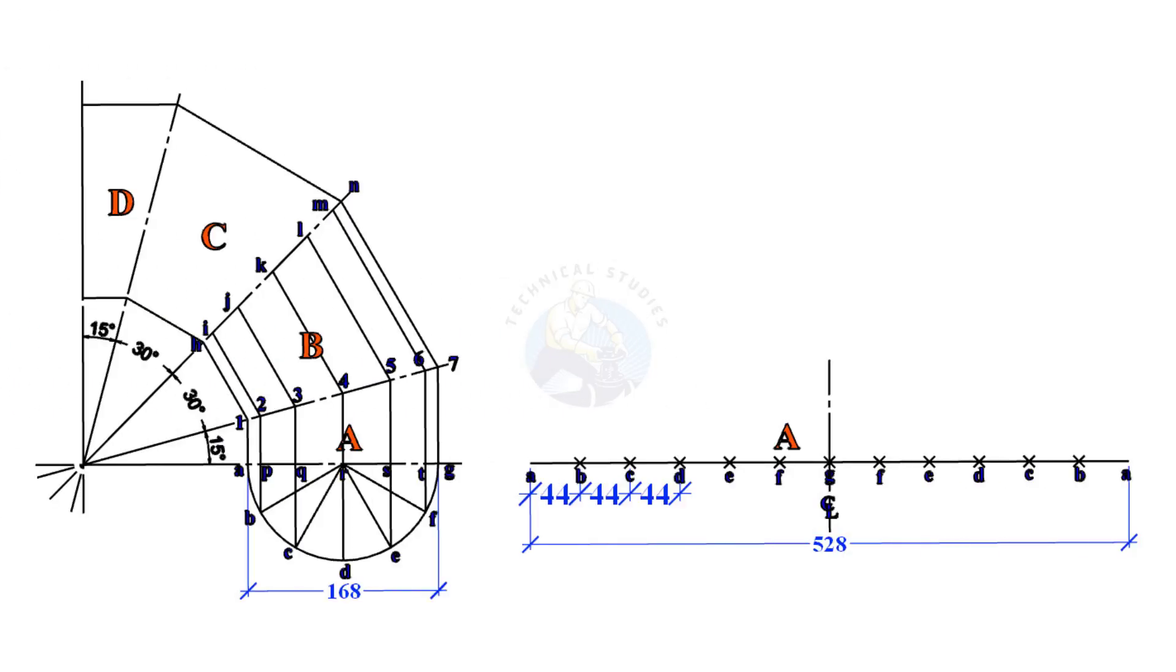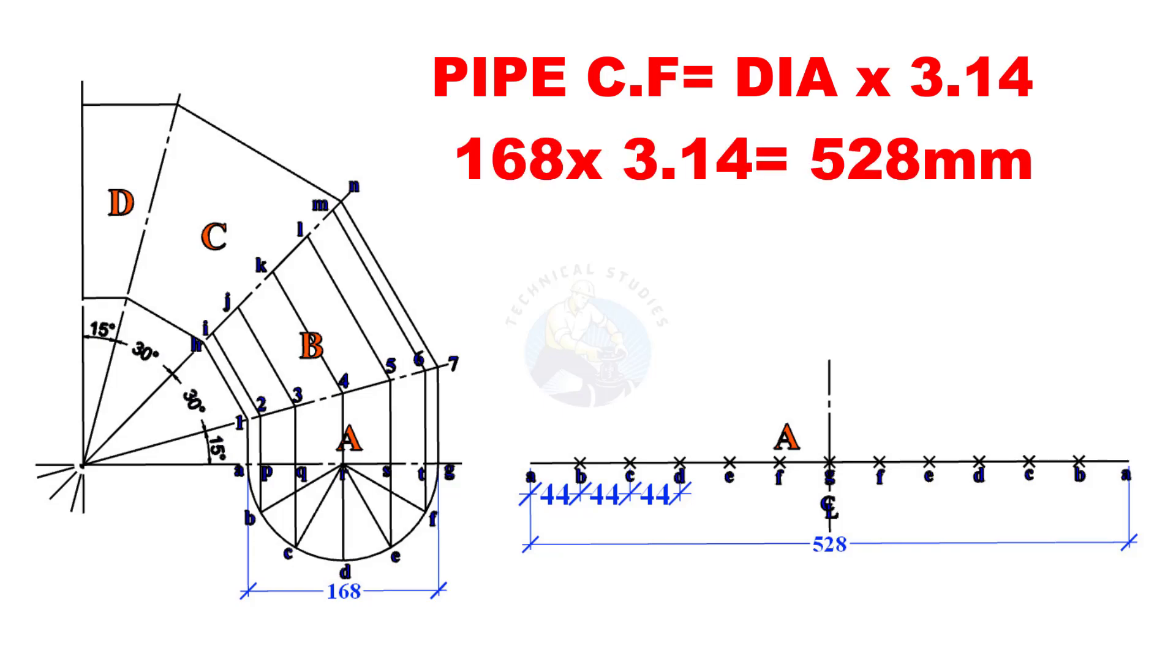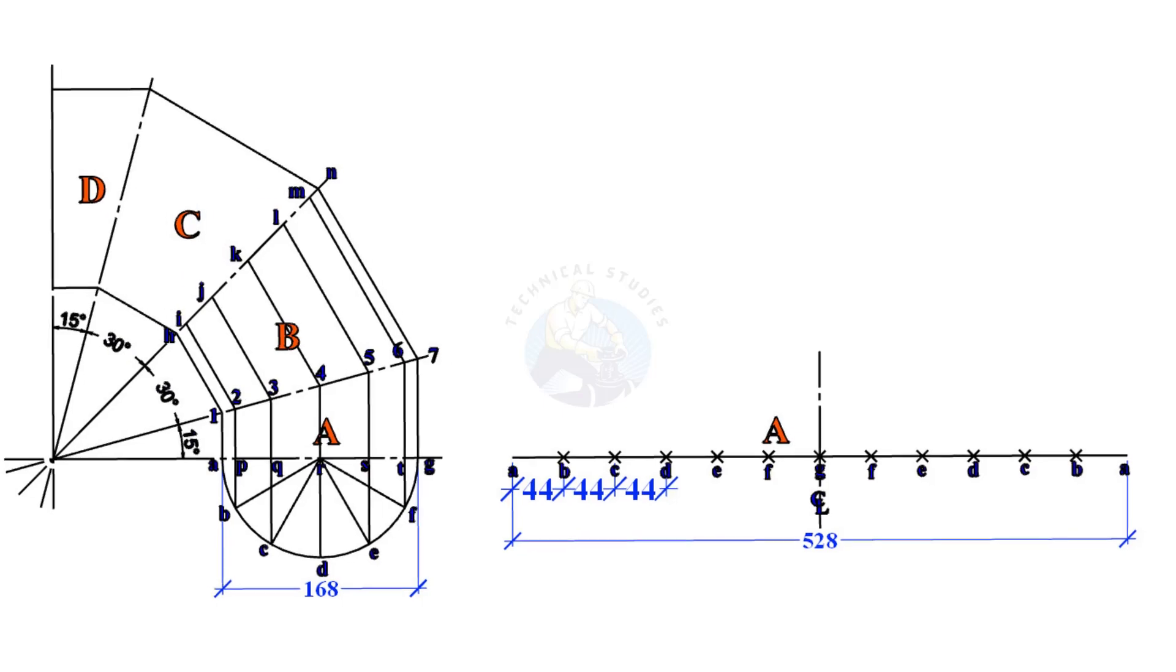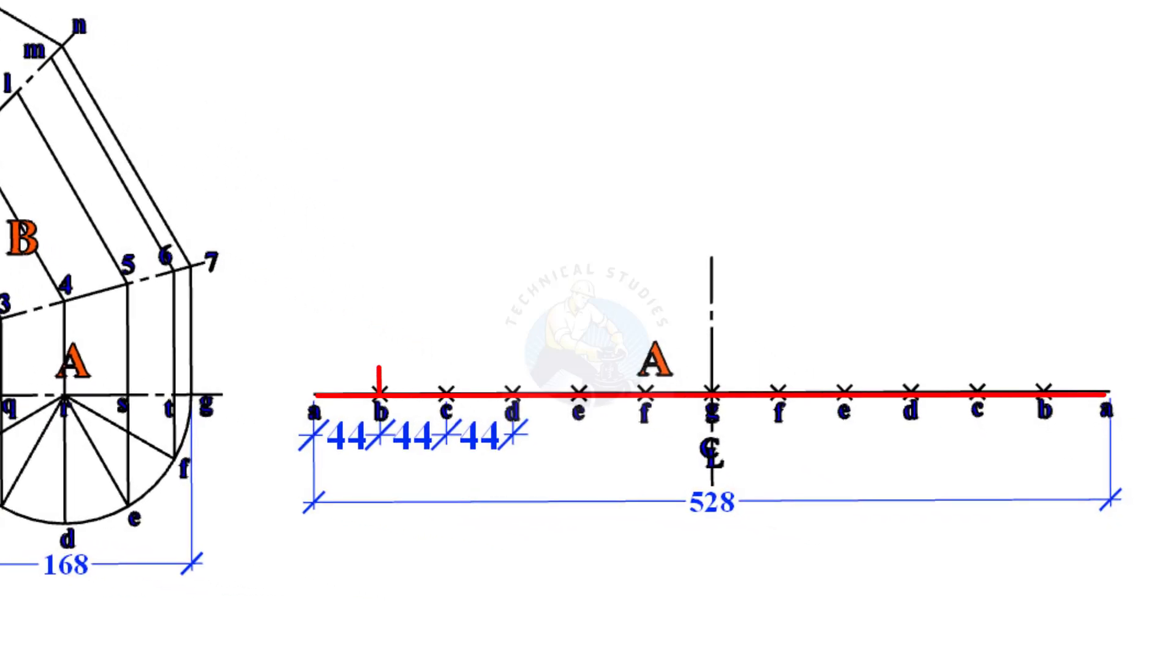Calculate the circumference of the pipe. Pipe circumference is equal to pipe diameter multiplied by 3.142, which equals nearly 528mm. Draw a line with a length of 528mm and divide the line into 12 equal parts. Each part will be 44mm long.